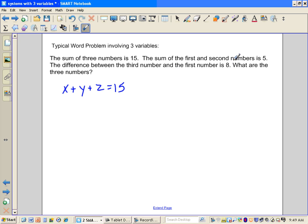The sum of the first and the second numbers is 5, so sum, and it just wants the first and second, so we're going to say x plus y is equal to 5. The difference, so that means we're going to be subtracting, the difference between the third number and the first number is 8, so the third number is z, and the first number x equals 8. Here we have three equations, we have three different variables, we're going to use some substitution here to try and solve for the variables.